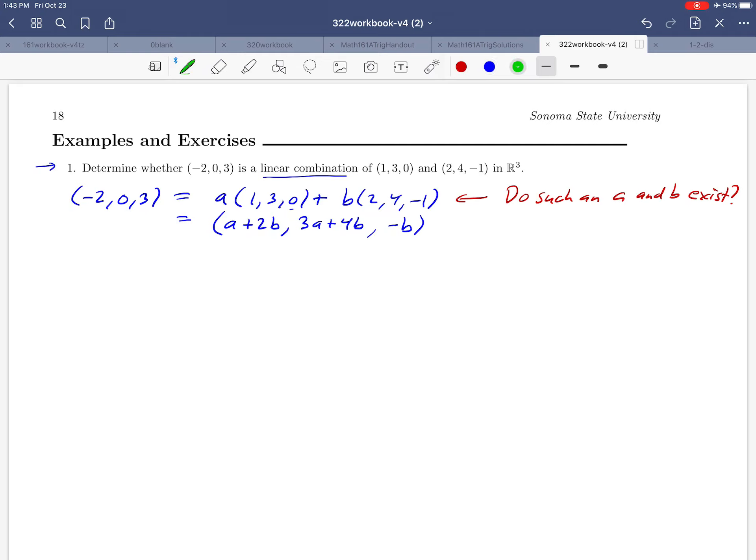And what that means then is that for this statement to be true, we need all of the coordinates to be true. So the first thing that has to be true is that -2 has to equal a + 2b. Let's write that first equation down. So a + 2b has to equal -2. And then the same thing has to be true for the other two coordinates. So 0 has to equal 3a + 4b. And then finally, very last equation, -b has to equal 3. And so what it comes down to is, can we solve that system for a and b, or is there no solution?